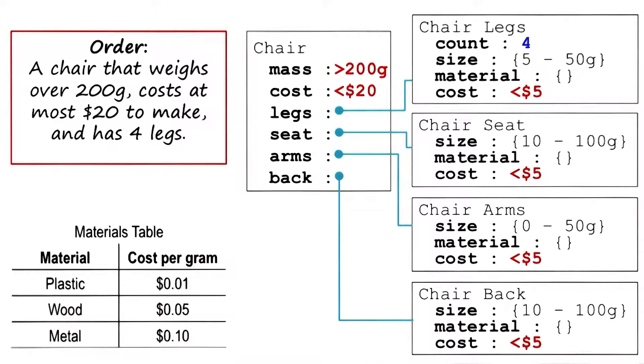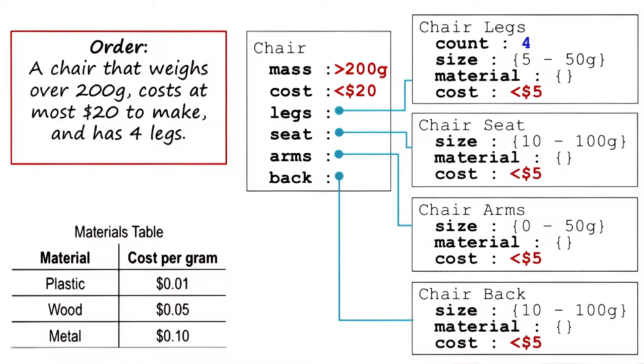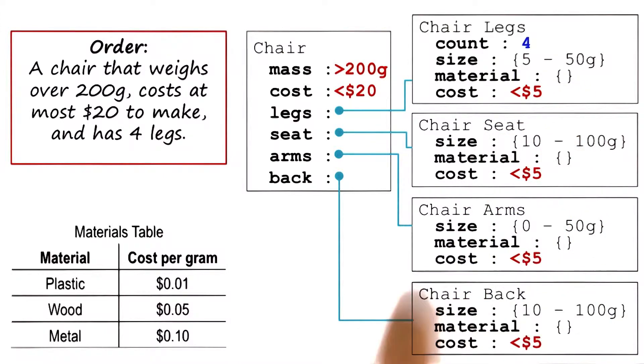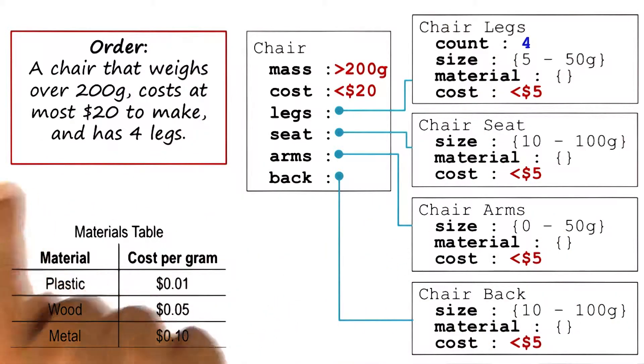Now suppose that the configuration process has an abstract plan which first decides on the value of the cost variable before it decides on other variables. Let us also further suppose that this plan for deciding on the cost evenly distributes the cost between the various components, until and unless specified otherwise by the specification.